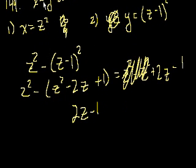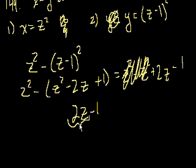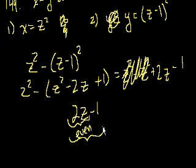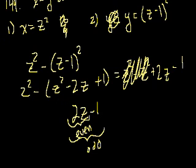Using both statements, x minus y simplifies to 2z minus 1. Since z is a positive integer, 2z is even — it's a multiple of 2. And if you subtract 1 from an even number, the whole expression has to be odd. So both statements together are sufficient to say that x minus y is odd.